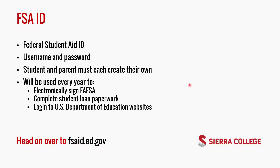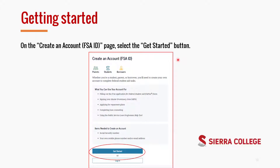This next section will talk about the FSA ID — Federal Student Aid ID. It's used to electronically sign the FAFSA, complete student loan paperwork, and log into all U.S. Department of Education websites. Think of this as your FAFSA account. As long as you're in college and applying for financial aid, you'll use your FSA ID every single year. To get started, head over to the FSA ID creation page and click the 'Get Started' button.